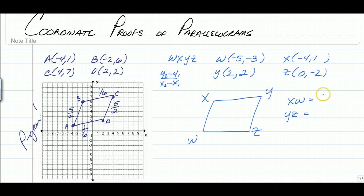X and W, we have 1 minus negative 3 over negative 4 minus negative 5. That would end up giving us 4 over 1. So the slope of XW is 4 over 1.